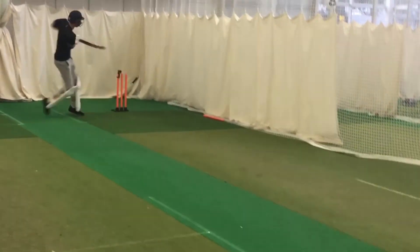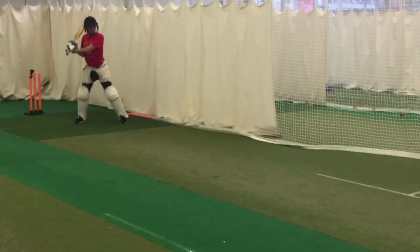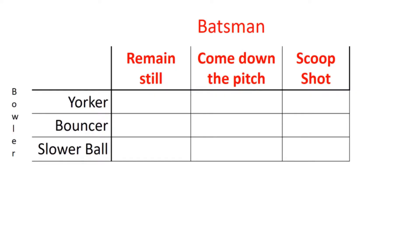As each player must decide on their course of action before they know the other player's action, we can model this as a simultaneous play game. We can write the payoff for each action in a matrix and use it to display the payoff from each combination of actions.